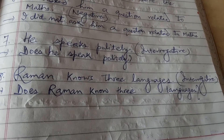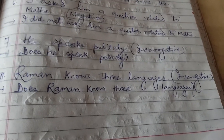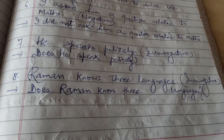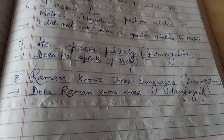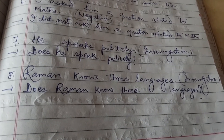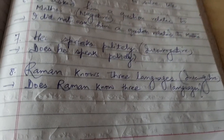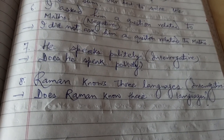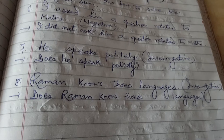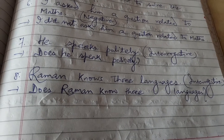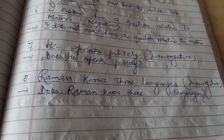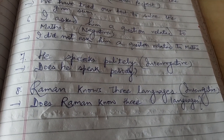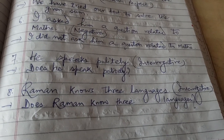Question number eight, the last question of this worksheet: 'Raman knows three languages.' This is again simple present tense. The subject 'Raman' is third person singular number, so we use 'does' before it. The answer will become: 'Does Raman know three languages?' I hope you have understood. Thank you, see you in the next video.